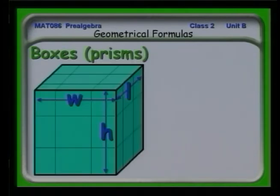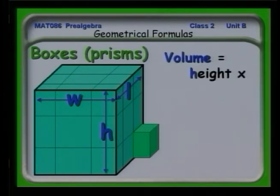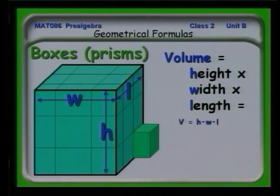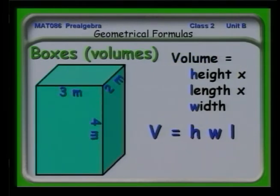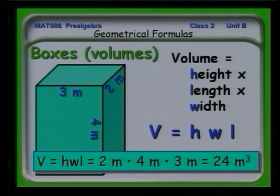Next we can talk about formulas related to three-dimensional objects, boxes more formally called prisms, having a length, width, and a height. You can see that boxes are made up of tiny blocks. The volume is the height times the width times the length, or we can express it as a simple formula: height times width times length. Here is a particular box, 2 meters by 4 meters by 3 meters. I multiply that together and get 24. Notice I have cubic meters, meters cubed.